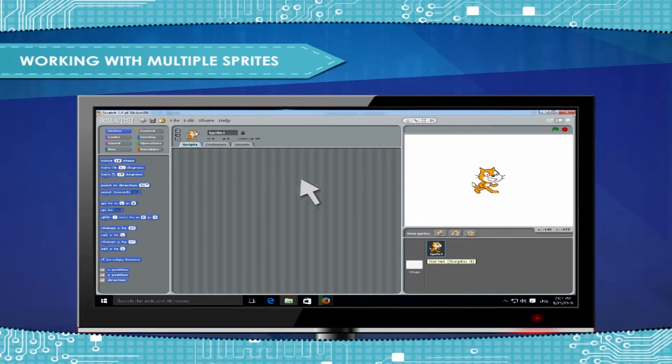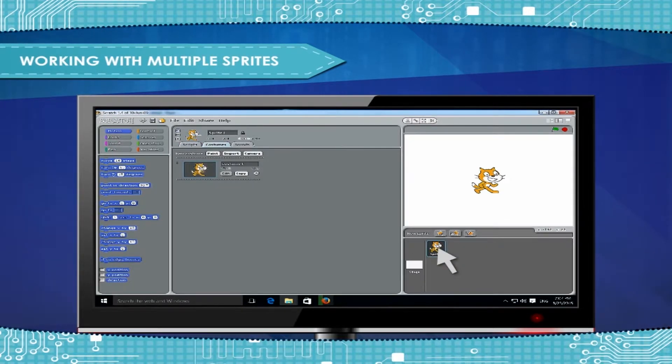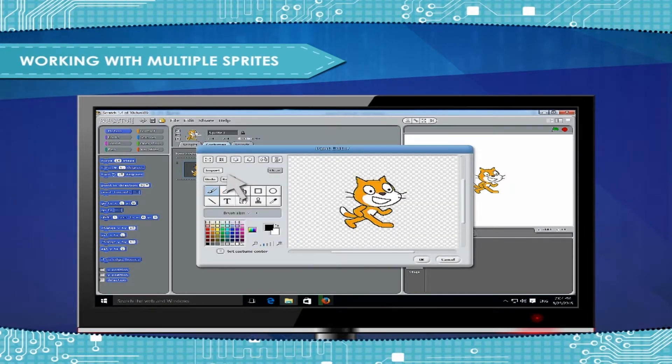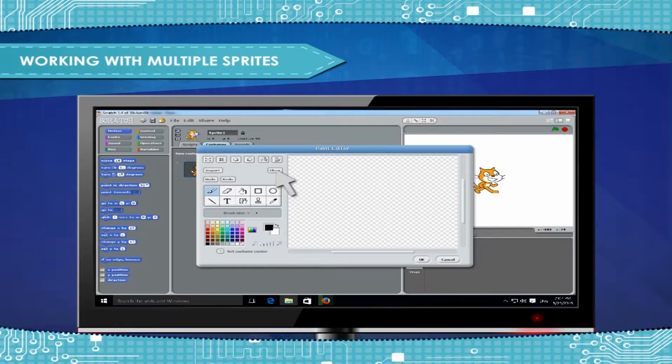You have learnt how to switch between sprites and how to create a new sprite. Now you can learn to work with multiple sprites. For example, we can create two sprites as shown here.